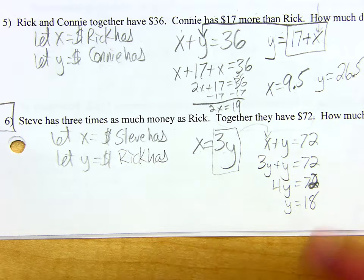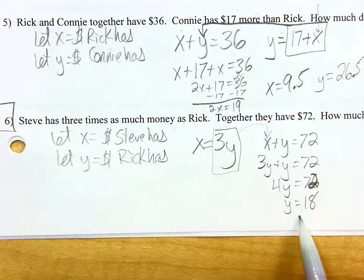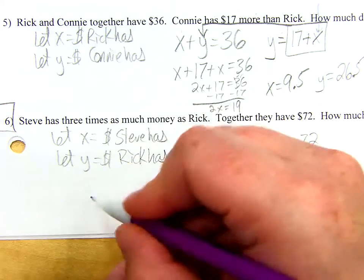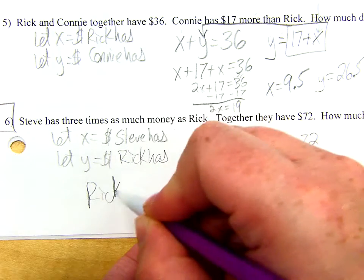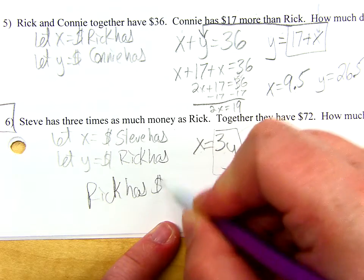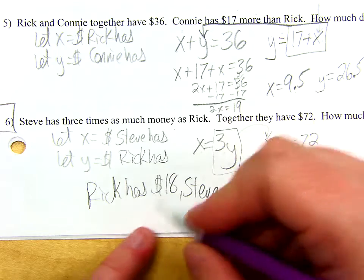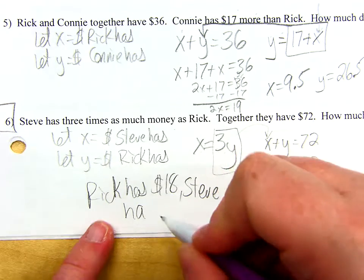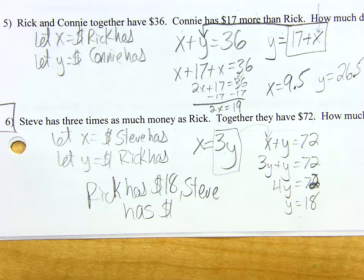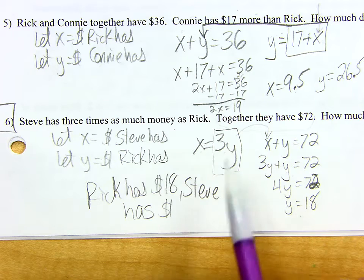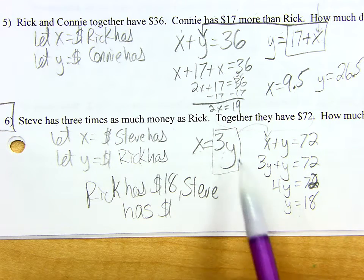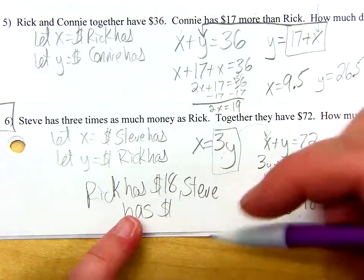Y stands for Rick, so Rick has $18. They want both answers, so how much does Steve have? If Y is 18, that means X would be 3 times Y — $54.